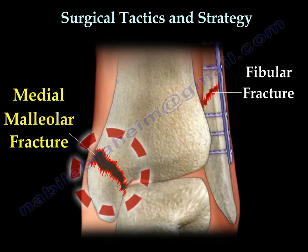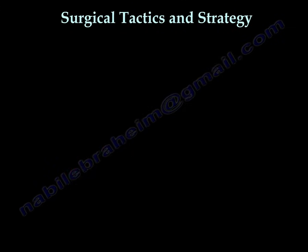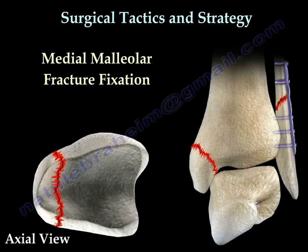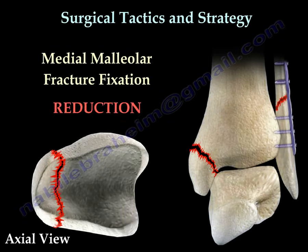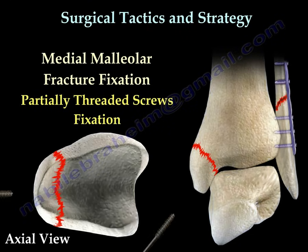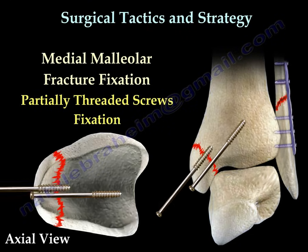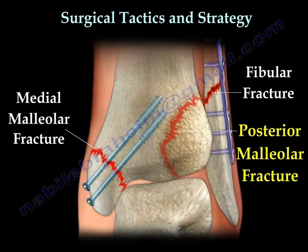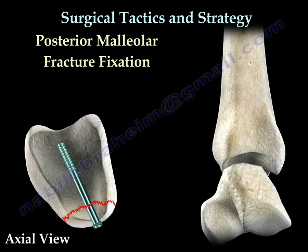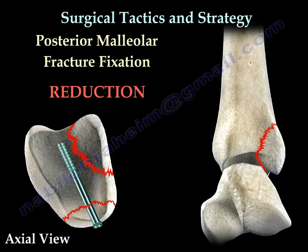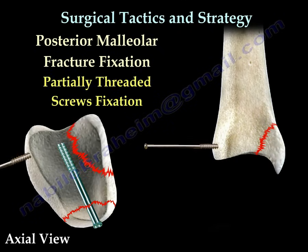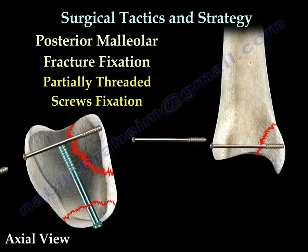Next we go to the medial side. The medial malleolus is reduced and fixed, usually with partially threaded screws. Then we go to the posterior malleolus. The posterior malleolus is usually fixed if it is a large fragment. We fix it directly or indirectly by partially threaded screws.